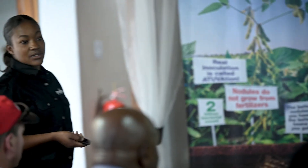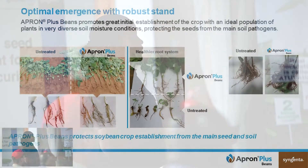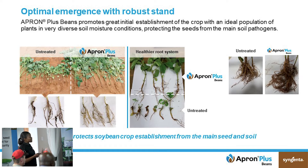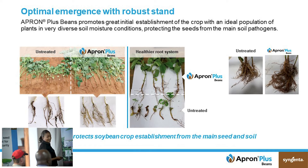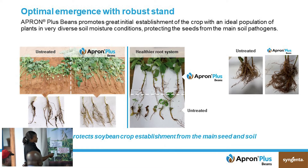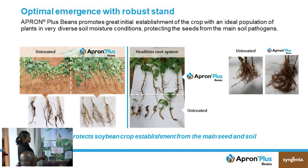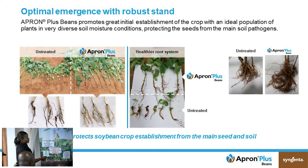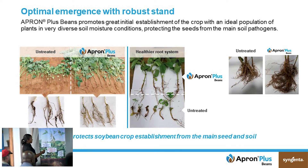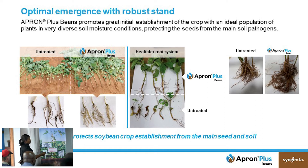We're mixing these results with South African results. These are from South Africa, and what you'll notice is that the results are consistent — meaning this product will work whichever country you use it. Already this is exactly what we're seeing with the Zambian trials. Here is the untreated, where root establishment on the control is lower. In the plot treated with Apron Plus Beans you have more root hairs. Looking at these plants, you can also see the height difference and higher vigor compared to the untreated.